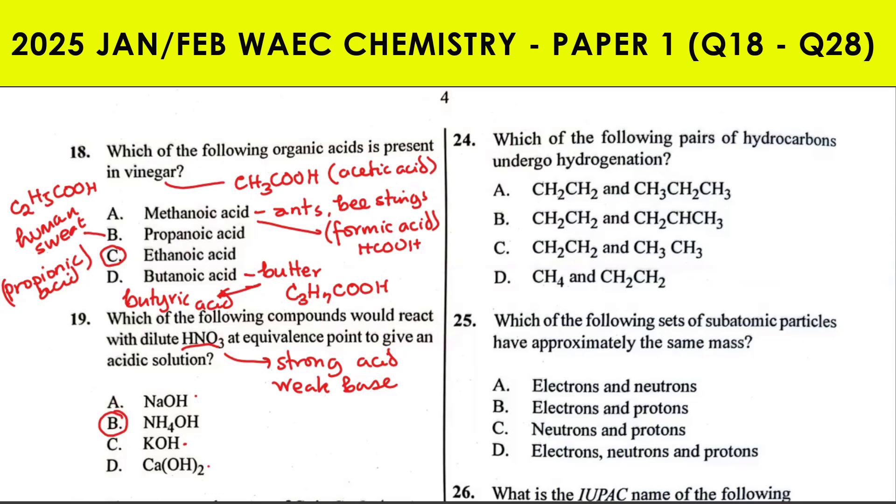Question 24: which of the following pairs of hydrocarbons undergo hydrogenation? Hydrogenation is an addition reaction - addition of hydrogen. Which organic compounds undergo addition reactions? It's the alkenes. Alkenes undergo addition reaction because they are unsaturated hydrocarbons. So how do you get the answer? Which of these pairs are alkenes? What's the general formula for alkenes? CₙH₂ₙ. Which of these pairs conform to CₙH₂ₙ?